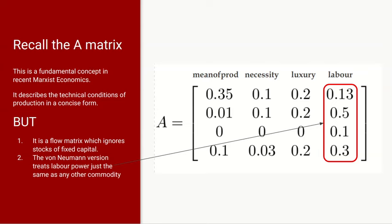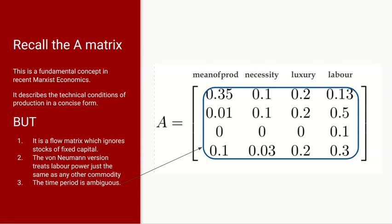Another feature of the von Neumann model is that it treats labour or labour power just the same as any other commodity. There's a column in the matrix for the reproduction of labour power and each cell in that represents the consumption by workers of the goods and use values necessary to reproduce their labour power. The last thing is that the time period is ambiguous. This is an abstract representation of the problem, and the development of these models starts from abstract simple models and then you have to make them more complicated to deal with the concreteness of the real world.